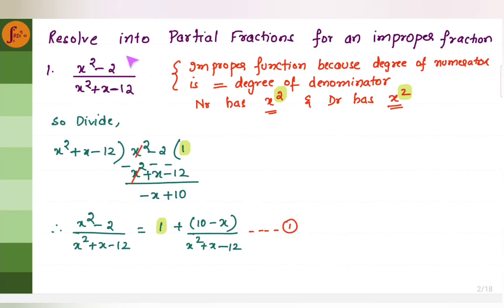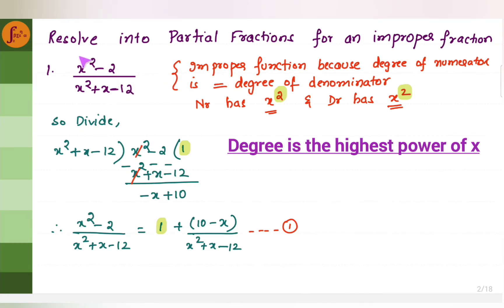Resolve this improper fraction into partial fractions. How do we identify that this is an improper fraction? We look at the degree of the numerator — degree is nothing but the power of x. The degree of the numerator is 2 and the denominator is also 2. If the degree of the numerator is equal to or greater than the degree of the denominator, then it is an improper fraction. In this case, both degrees are equal, so it is an improper fraction.